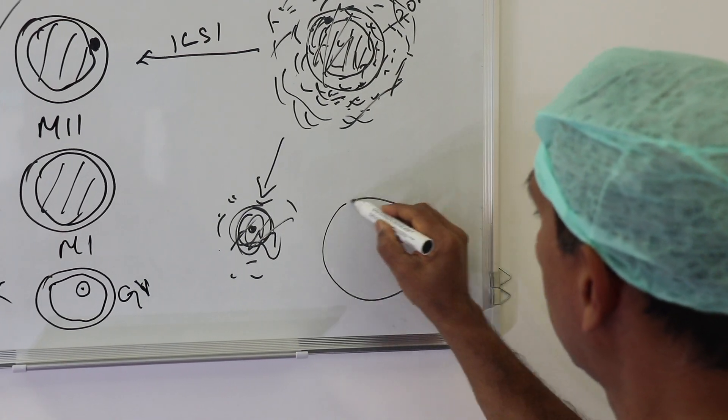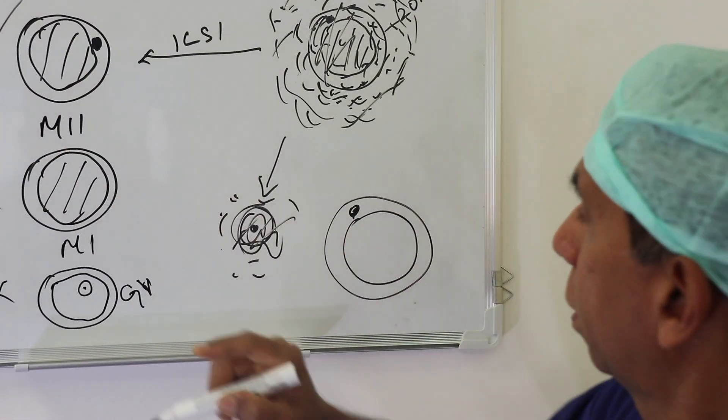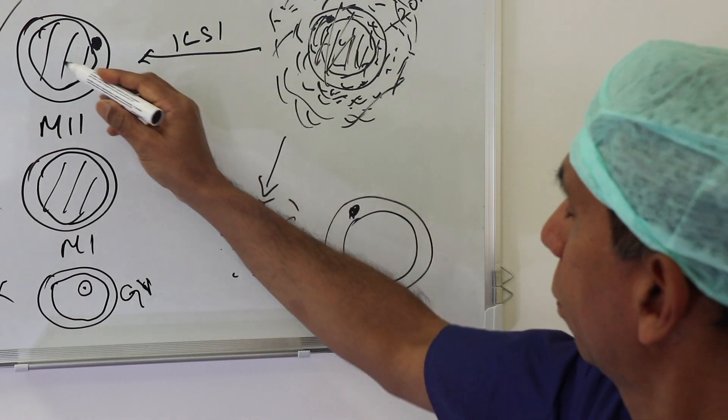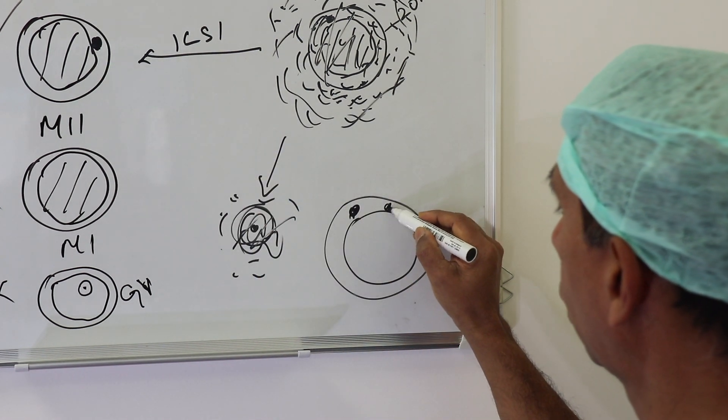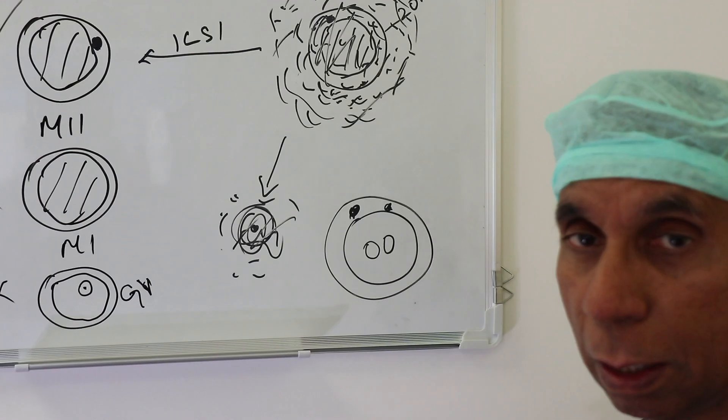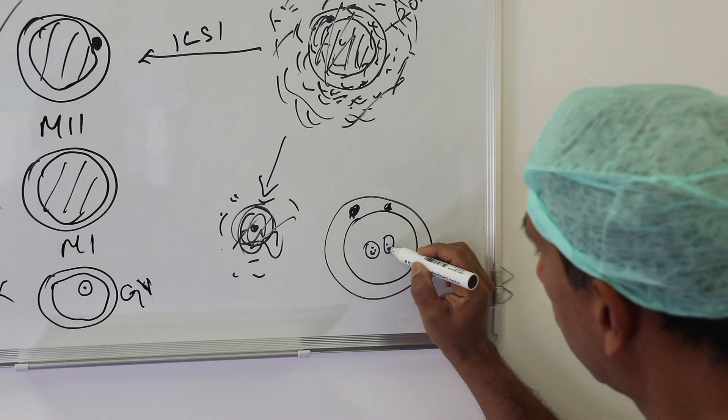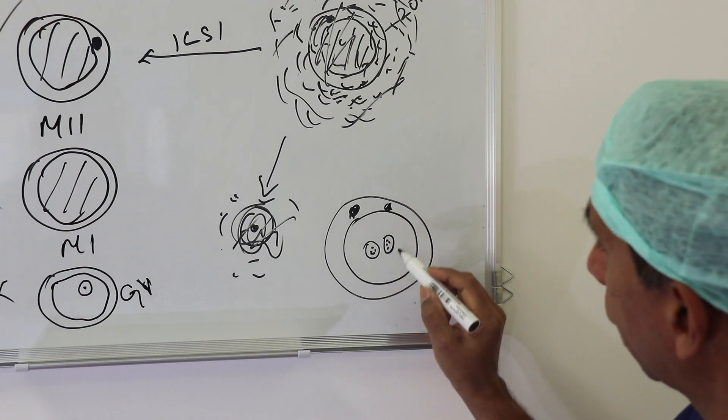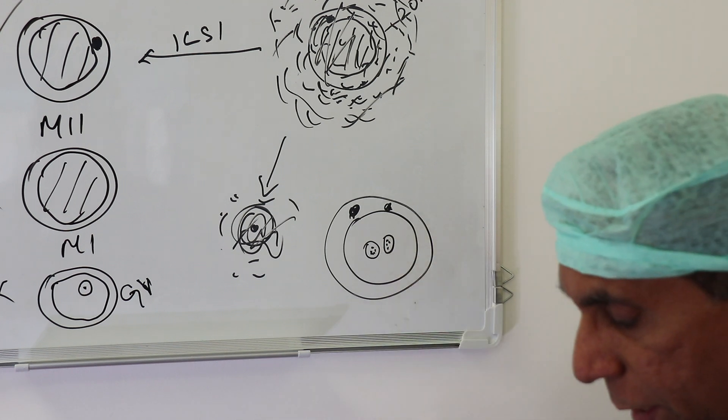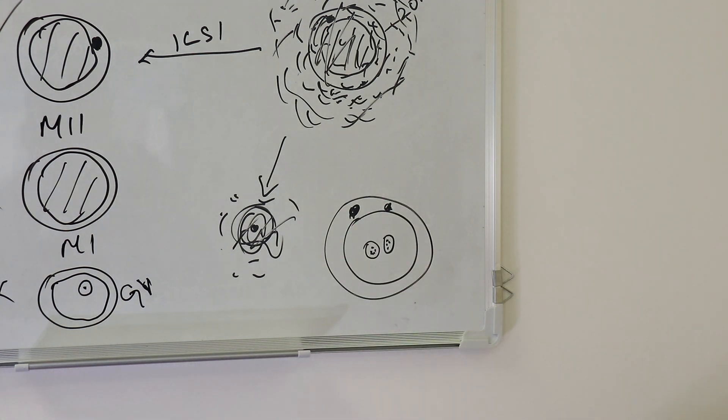If it's fertilized, what you see is the metaphase 1 or metaphase 2 eggs. Once fertilized, then you'll see two polar bodies and then two nuclei that we call pronucleus, or PN. The difference between the PN and the vesicle is that in a PN you see nucleolus. If I show you some pictures, then it will be more clear.